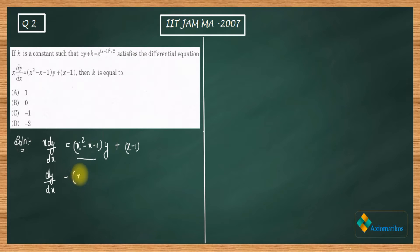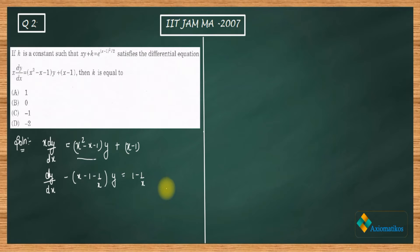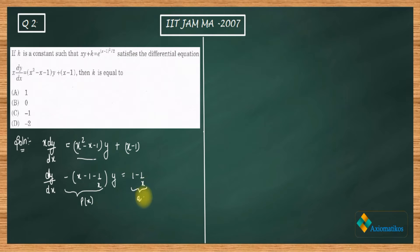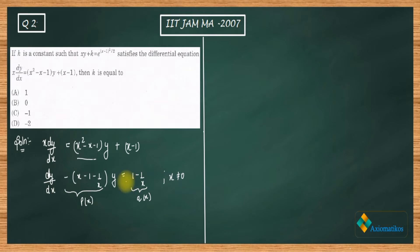After rearranging, we get dy/dx minus (x − 1 − 1/x)y equals (1 − 1/x). We consider the coefficient of y as P(x) and the right-hand side as Q(x), noting that we are working under the condition x is non-zero.